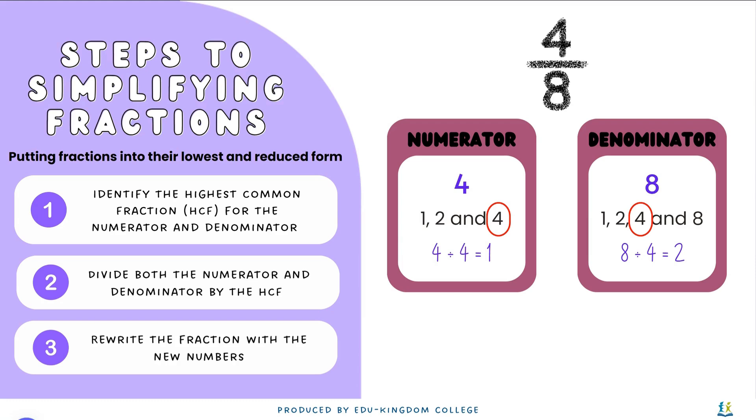Moving on to step 2. We have to divide both the denominator and the numerator by the HCF, which is 4. For the numerator, 4 divided by 4 is 1. For the denominator, 8 divided by 4 is 2.